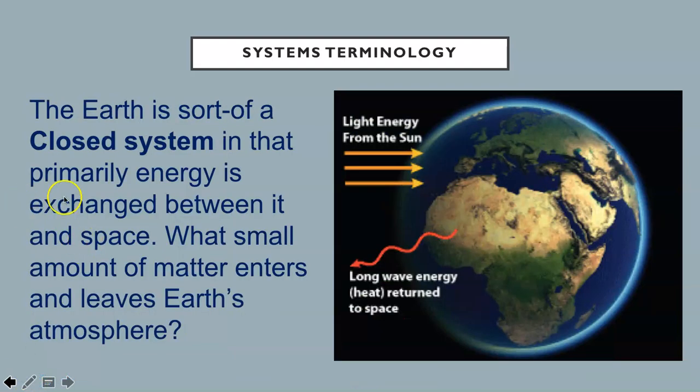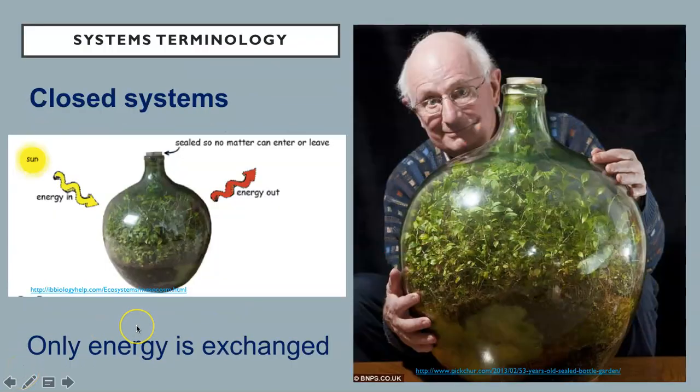The earth is sort of a closed system in that primarily energy is exchanged between it and space. What small amount of matter enters and leaves earth's atmosphere? Most examples of closed systems are artificial, like these sealed mesocosms. This one was last watered in 1972. They are sealed, so no matter can enter or leave the system, but energy in the form of light enters the system, and energy in the form of heat leaves the system.